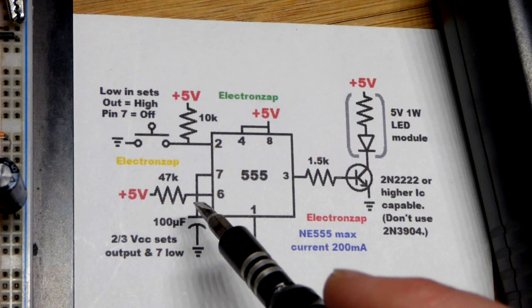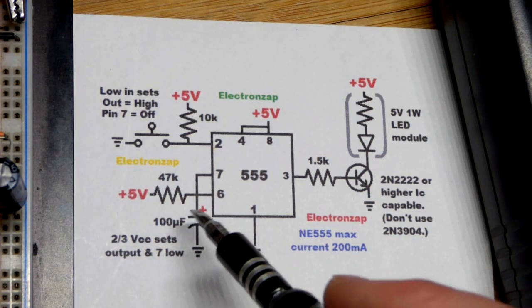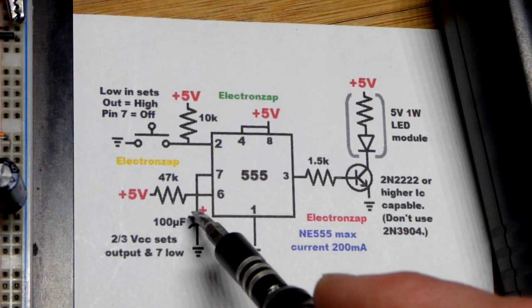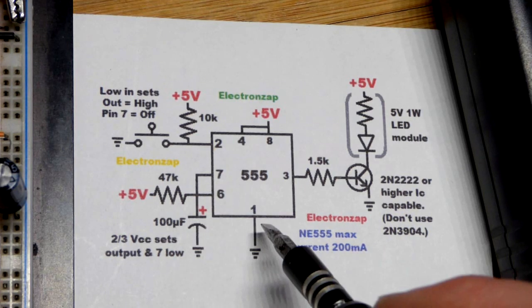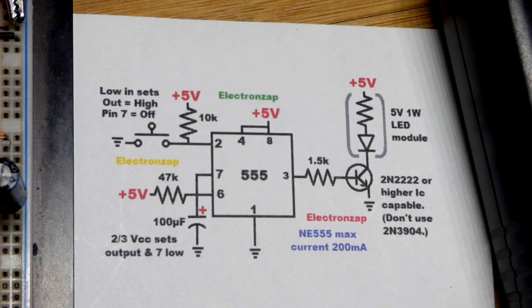We'll talk more about that coming up. But once it gets to 2/3 supply voltage, output goes low and pin 7 connects ground. The capacitor instantly discharges. That's the timing part. Basic monostable 555 timer stuff.